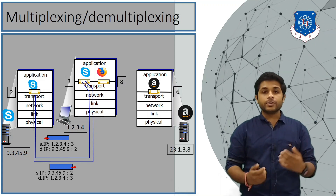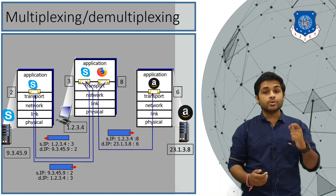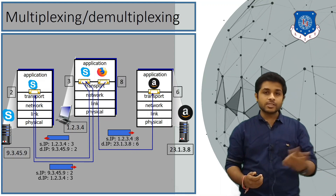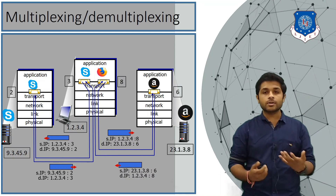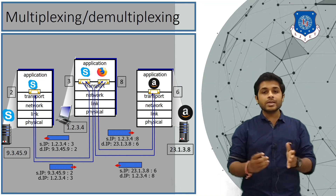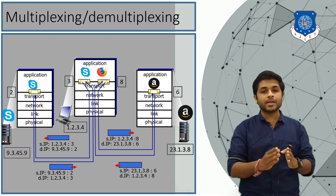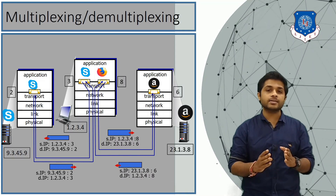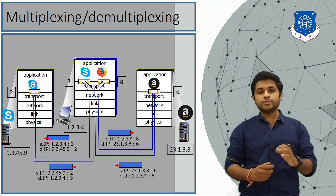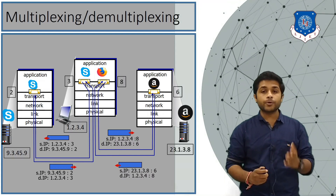When you open the Amazon website in the browser, the request is sent using port address 8, and the response is also received using the port address. Using the port address, we can deliver data to the correct process and the correct application — that is why port addresses are needed, and it is the responsibility of the transport layer to add port addresses.